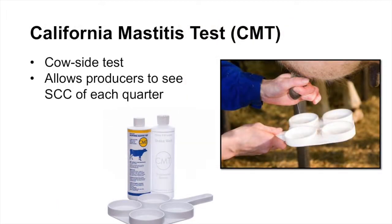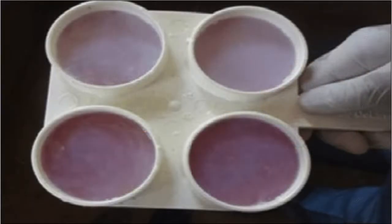One way we can detect mastitis in an individual cow is through the California Mastitis Test. The paddle shown here has four sections, each representing one of the cow's four quarters. The California Mastitis Test is a cow-side test — we don't typically use it with a bulk tank, but with an individual cow to diagnose mastitis in one of her quarters. A producer will take the paddle to the cow they suspect may be infected, use a particular iodine concentrate combined with a milk sample placed in each of the four sections of the paddle, and then swirl the paddle to mix the solution with the milk.